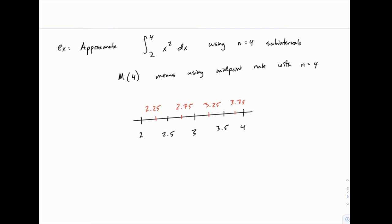Now, the midpoint rule says we're going to evaluate the function x squared at each of these midpoints, and as we do so, we'll multiply by the width delta x, which equals 0.5. Notice, delta x equals b minus a divided by n, or 4 minus 2 divided by 4, which equals a half, or 0.5.